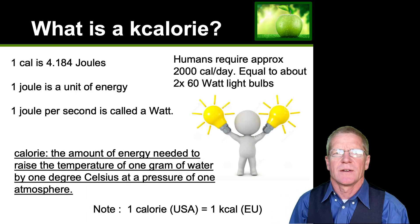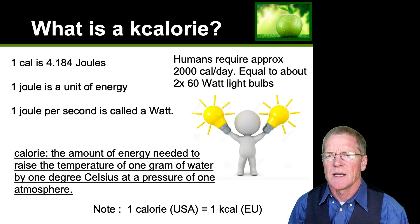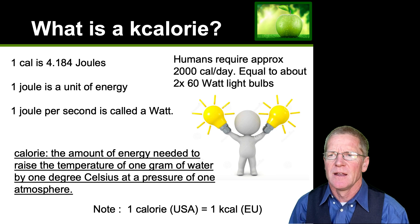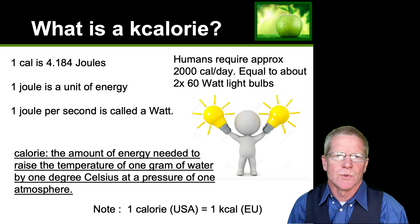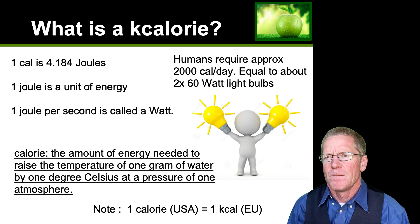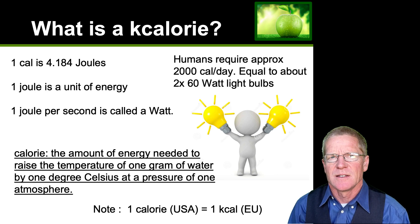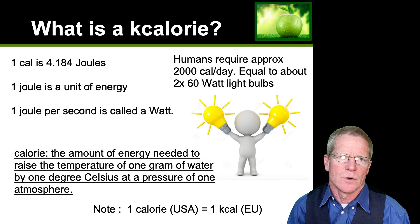Looking at kilocalories: how much energy does a human being need for one day? The approximation the USDA uses is that an average human being requires around 2,000 kilocalories per day. When you convert calories into joules and then into watts, you understand that a human being essentially requires the equivalent of two 60-watt light bulbs for an entire day's energy.